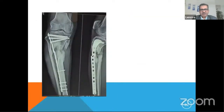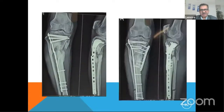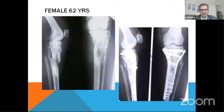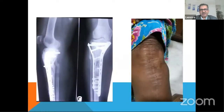In proximal tibia, always use two plates when there's a combination, because a single plate will not give the results. This plate has failed, and the patient had to be revised with another plate and bone grafting. This was a bad injury, before 15 years with no CT, and conventional plates were used.